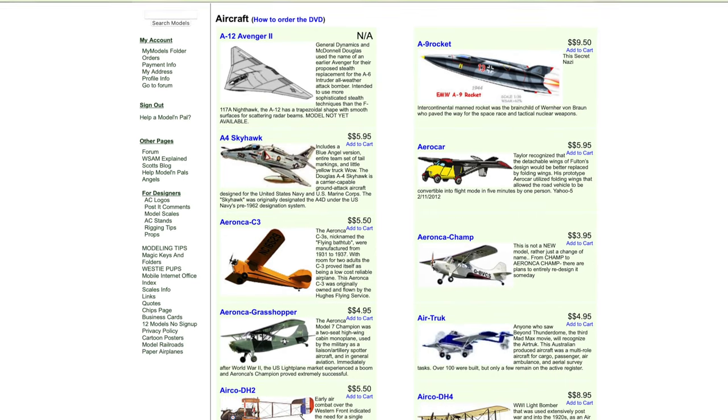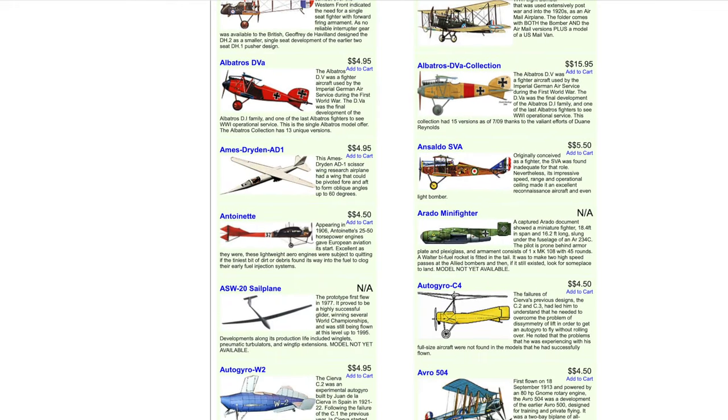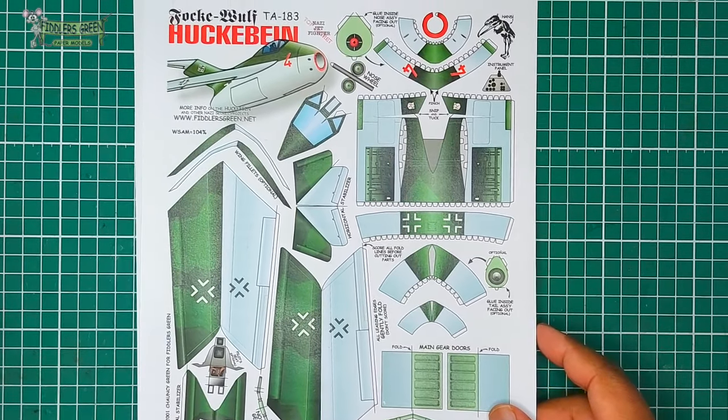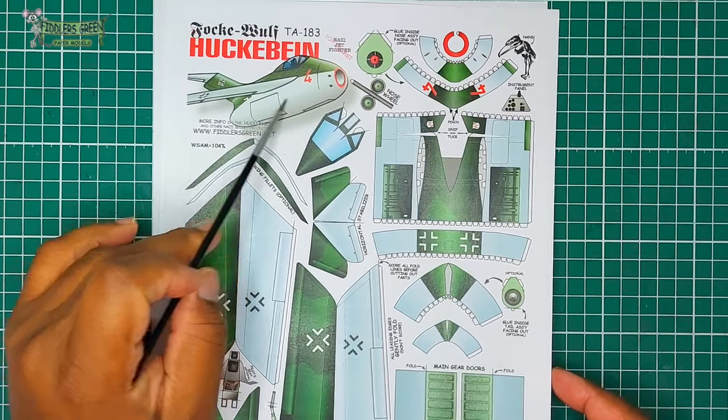So, like I said before and I'll say it again, just head on over to their website, fiddlersgreen.net, you'll be pleasantly surprised. And here we have the Focke-Wulf TA-183, Huckebein, or Huckbine. There it's called a Raven.